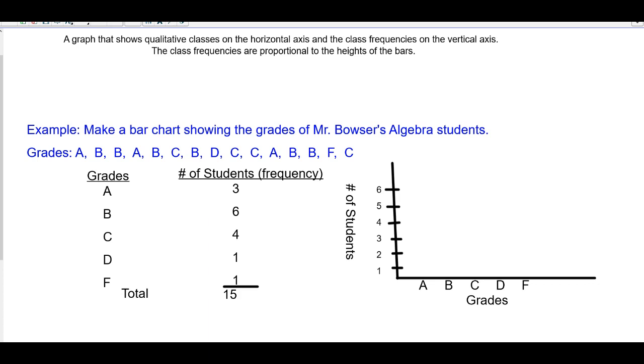So A has three. Let's see if I can get this to work. A has three, B has six. That looks good. C has four. D and F each have one.